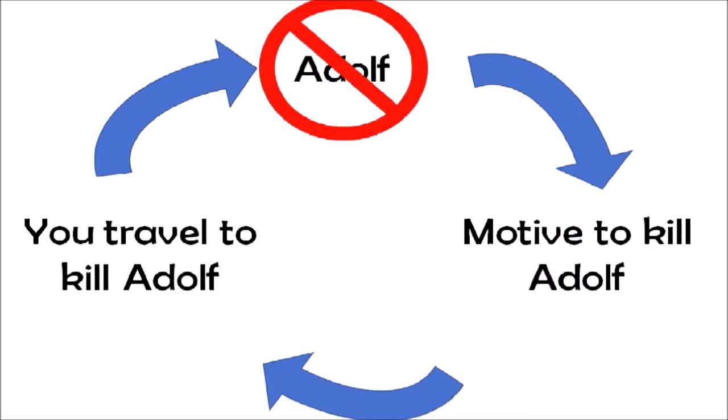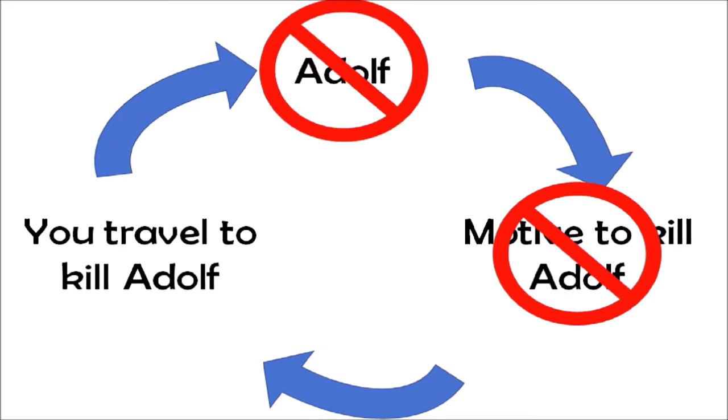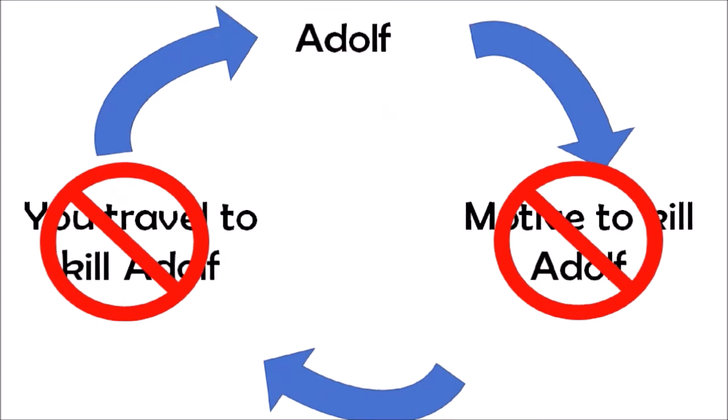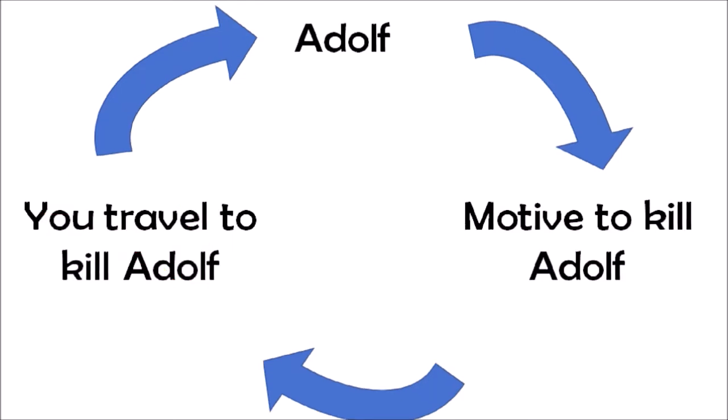Wait, hold up. So if you killed Adolf Hitler, then he wouldn't cause all those things, and then you wouldn't have the motive to kill Adolf Hitler, so you don't travel back in time to kill Adolf Hitler. So what now? But then Hitler survives, which means he caused all those things, which means you have the motive to kill Adolf Hitler, which means you travel back in time to kill Adolf Hitler, and then...